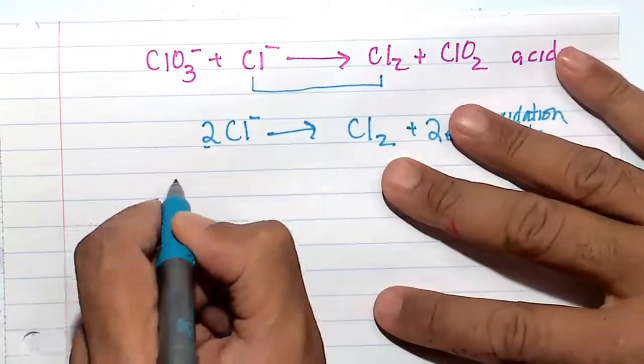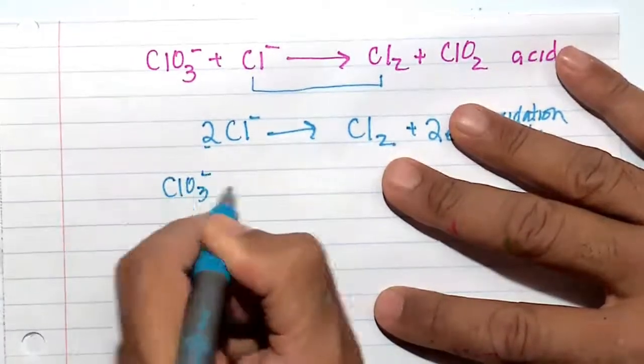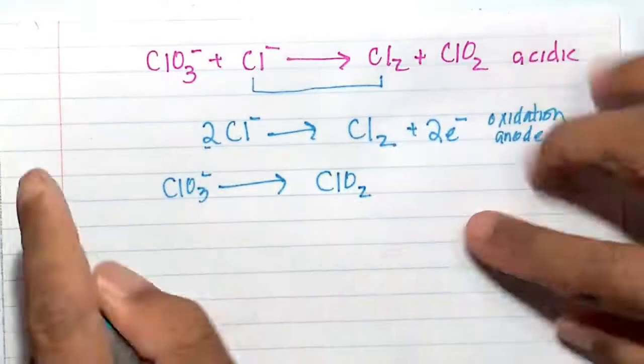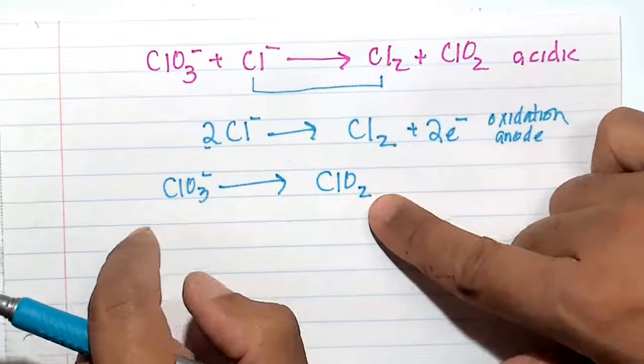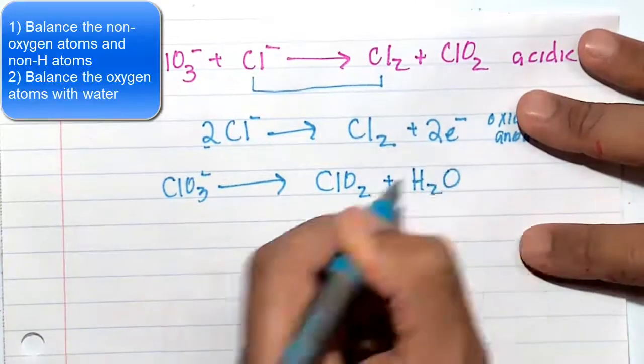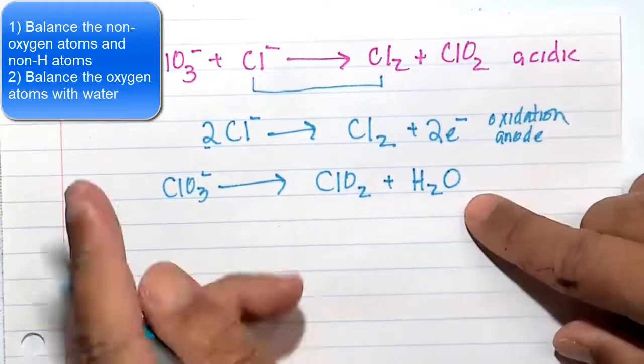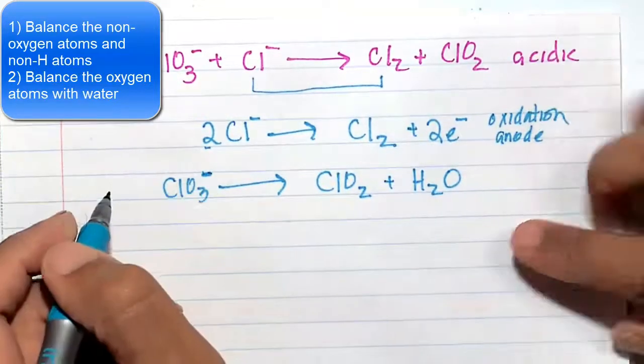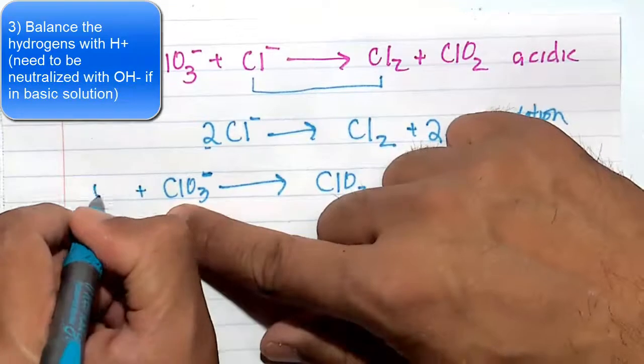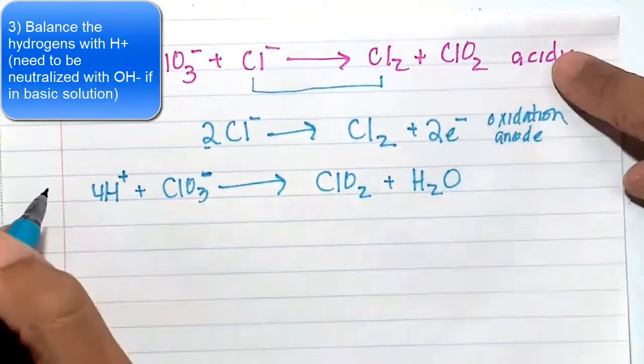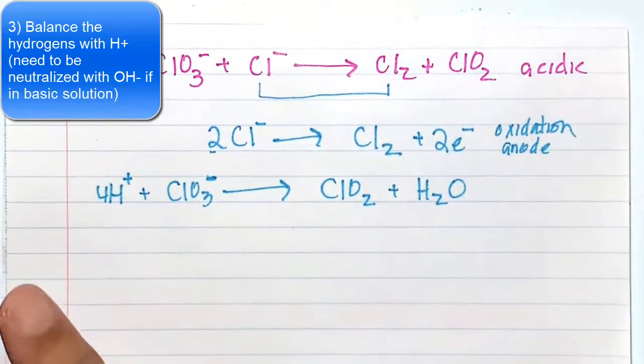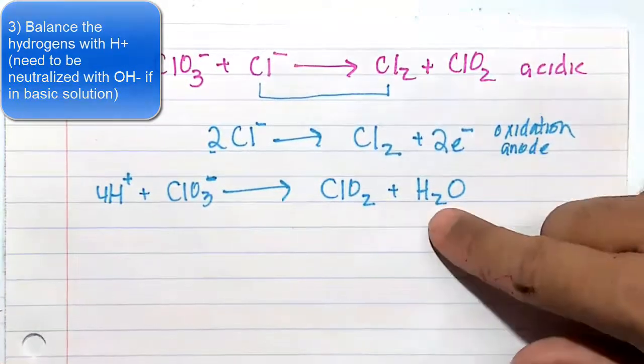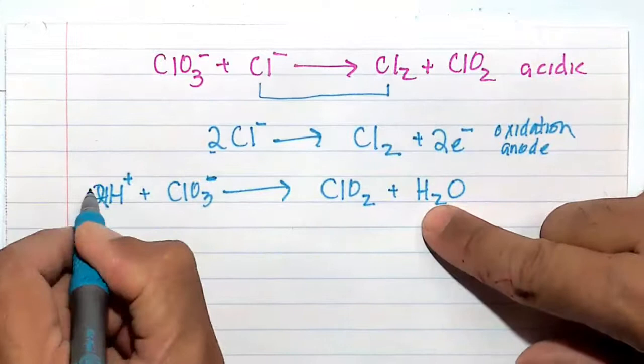Our second half reaction is ClO3- going to ClO2. So the chlorines are balanced. I'll balance the oxygens with water. I have two oxygens plus one oxygen is three oxygens. Let's go ahead and balance the hydrogens with H+. Since it's an acidic solution, it's perfectly legal.